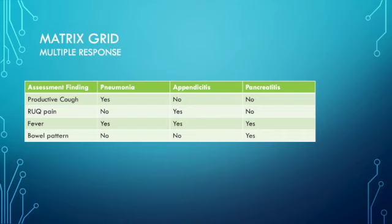The matrix grid is where you are correlating assessments with disease processes. For example, in pneumonia: is a productive cough related to pneumonia? Yes. Is right upper quadrant pain related to pneumonia? No. Is a fever related to pneumonia? Yes, typically. Is bowel pattern something you're going to assess in pneumonia? No. So here you just go through the disease and figure out if the assessment would rule in or rule out that diagnosis.